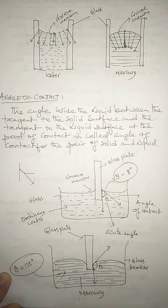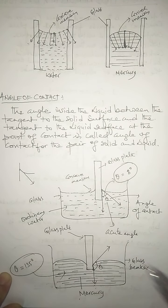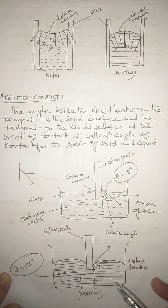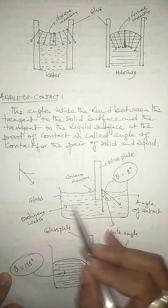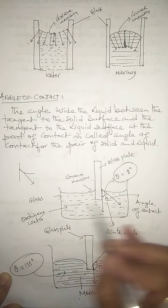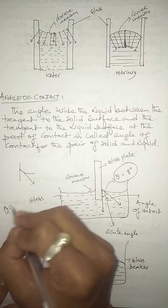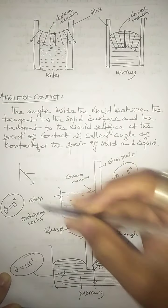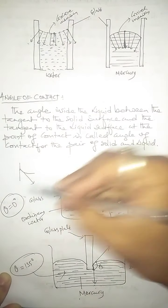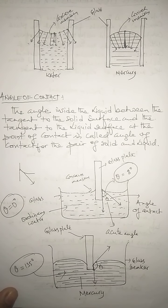For ordinary water (water with some impurities) in contact with glass, the angle of contact is approximately 8°, which is an acute angle, less than 90°. But if you take pure water and a clean glass plate, the angle of contact will be 0°. So 0° is the angle of contact for pure water and a clean glass plate.